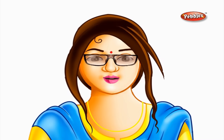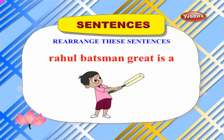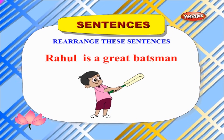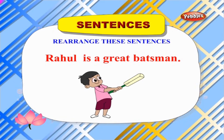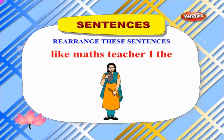Now let us rearrange these words to make sentences. We should also remember to start the sentence with a capital letter and end it with a full stop. 'Rahul batsman great is a' — does the sentence make sense? No. Let us arrange these words into a correct sentence: 'Rahul is a great batsman.' Yes, this sentence makes sense.